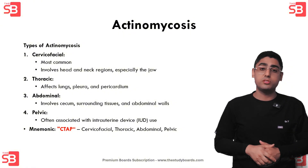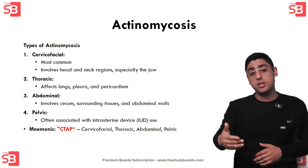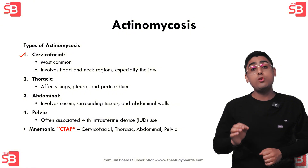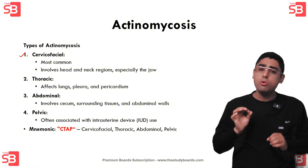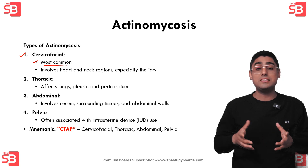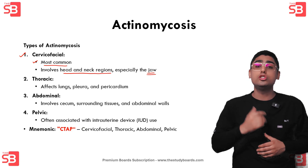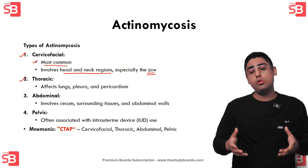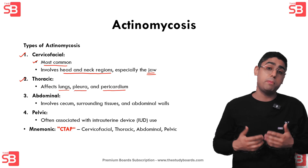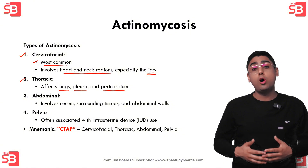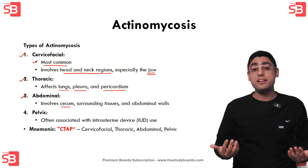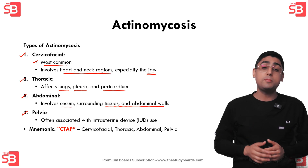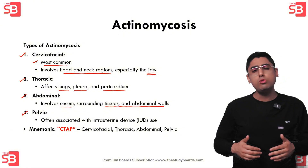There are different types of actinomycosis based on where the infection occurs in the body. The first is cervicofacial actinomycosis, the most common type, affecting the head, neck, and specifically the jaw region. The second is thoracic actinomycosis, involving the lungs, pleura, and pericardium. The third is abdominal actinomycosis, affecting the cecum, surrounding tissues, and abdominal walls.